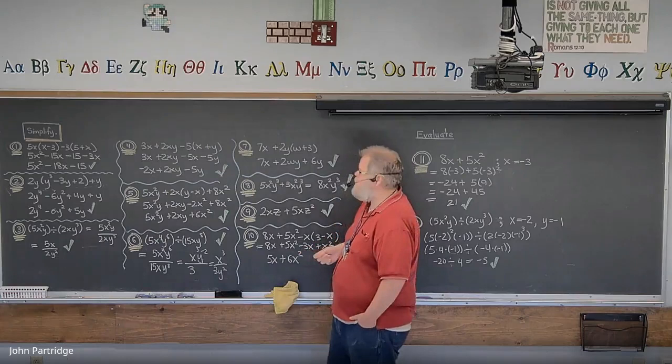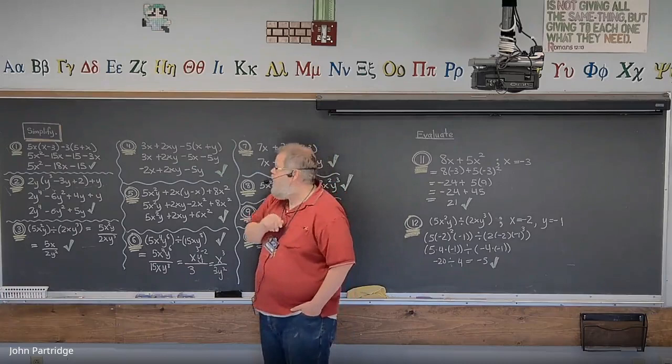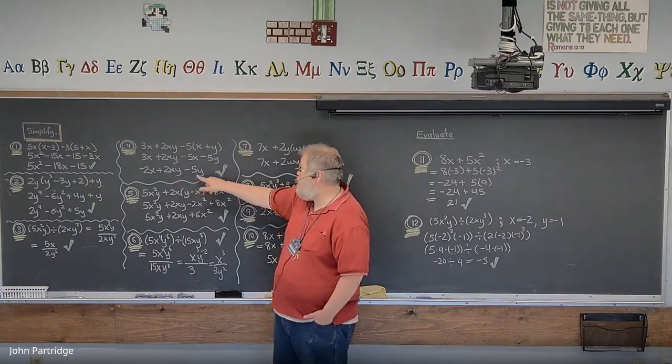Problem 4: 3x + 2xy - 5(x + y). Distributive property — distribute the -5. This gives 3x + 2xy - 5x - 5y. Are there like terms? Yes — 3x - 5x is -2x. Final answer: -2x + 2xy - 5y.